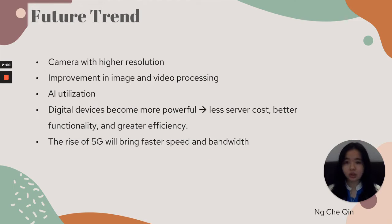Future Trends: In the future, cameras used in Smart Monitoring Systems will have higher resolution, and techniques in image and video processing will improve. With advances in machine learning and deep learning, AI will be utilised in this aspect. Digital devices will become more powerful, contributing to less server costs, better functionality, and greater efficiency. Lastly, the rise of 5G will bring faster speed and bandwidth to the system.